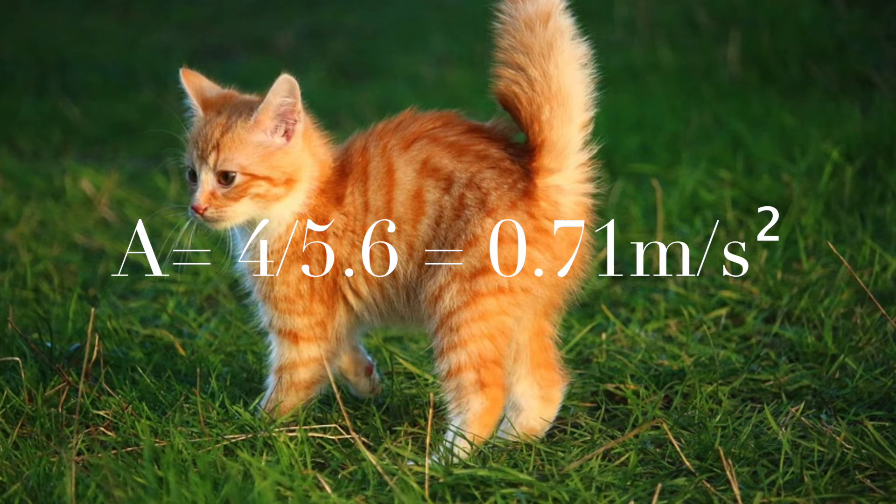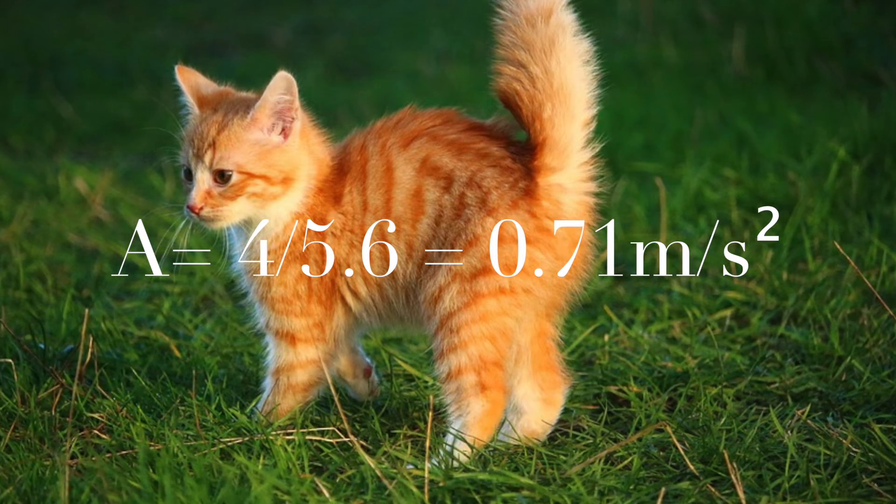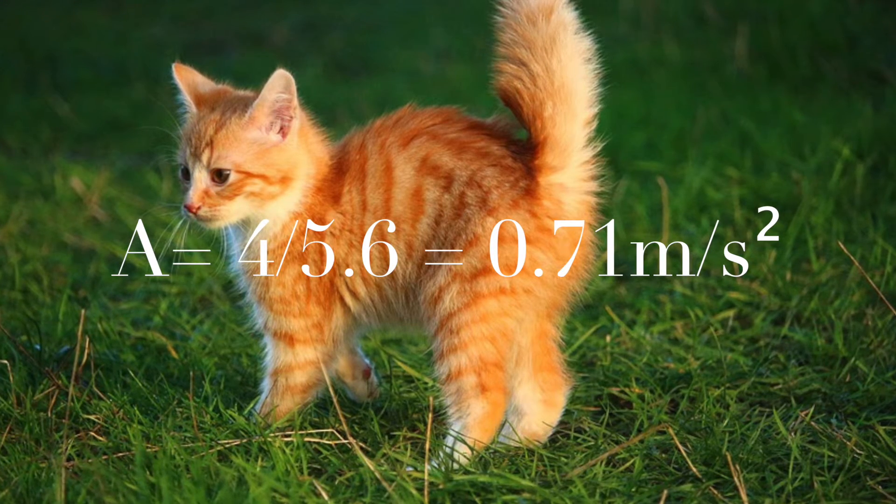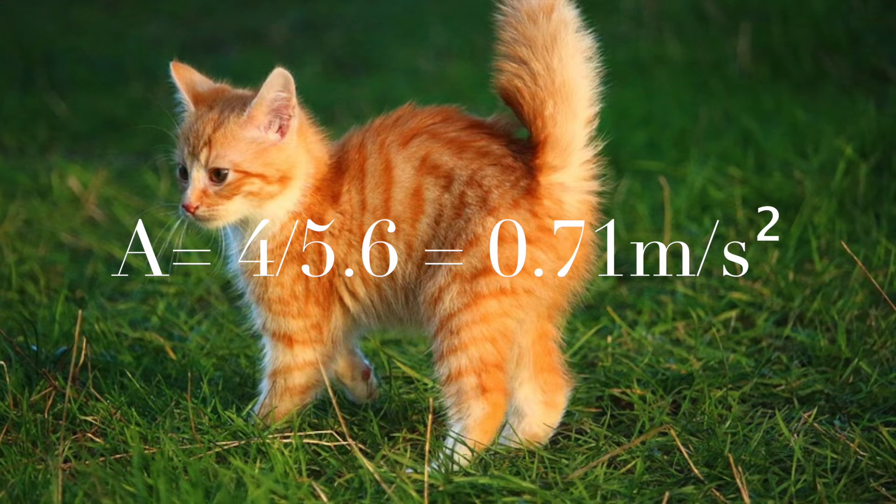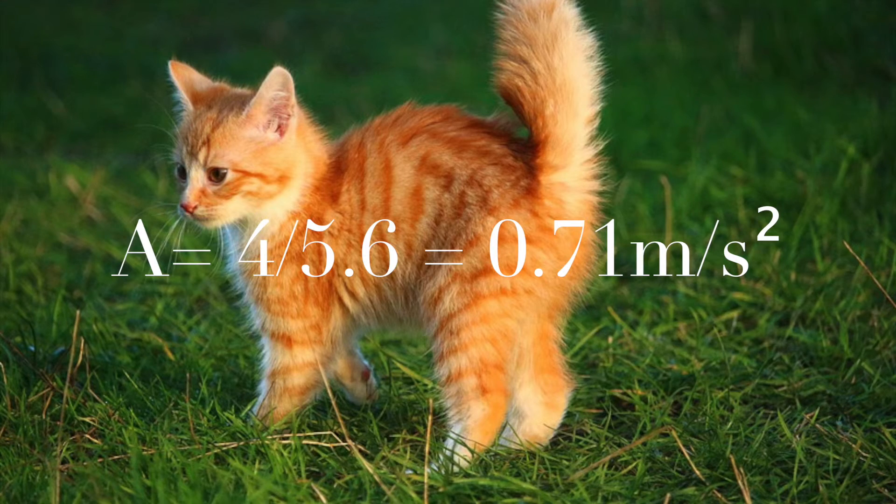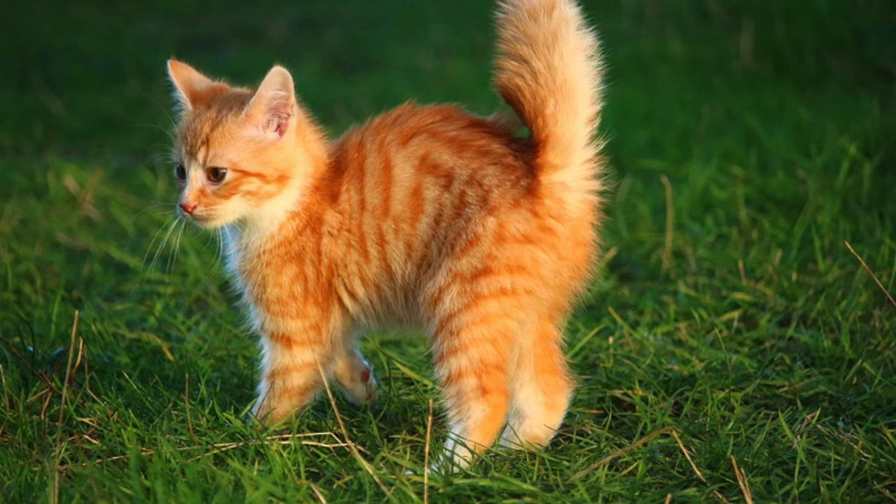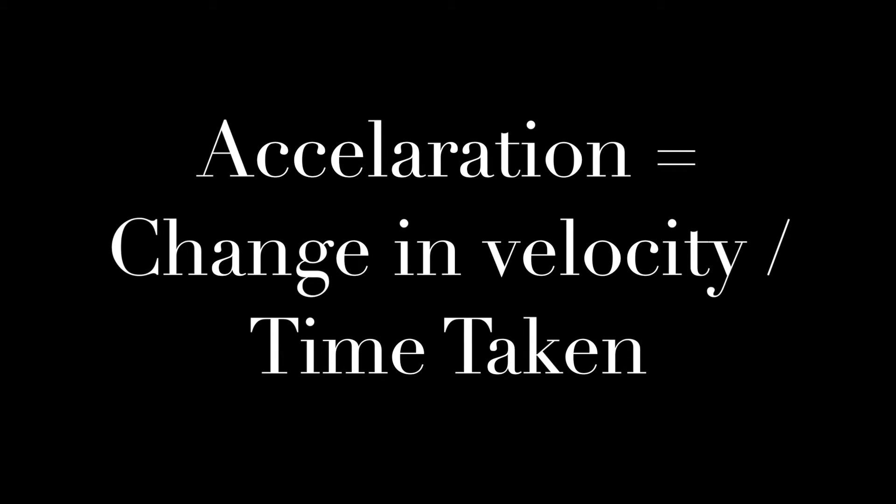So then you do acceleration is 4, which is the change in velocity, over 5.6 seconds, which is the time taken. And that is equal to 0.71 metres per second squared. And that is the acceleration.